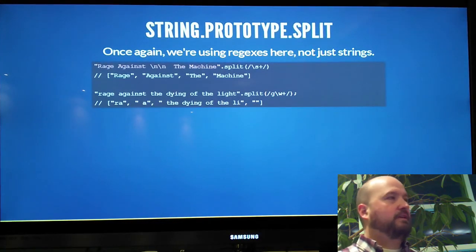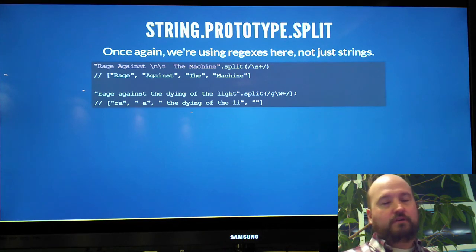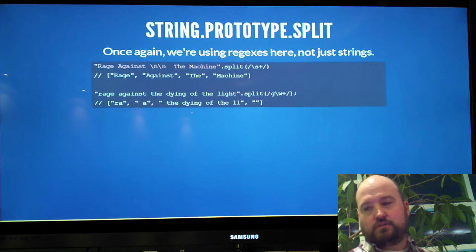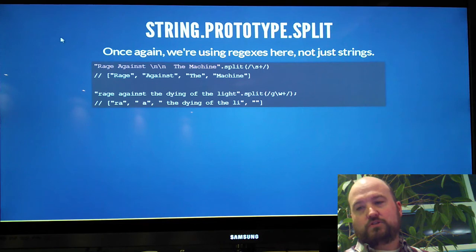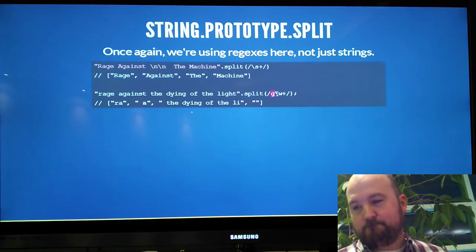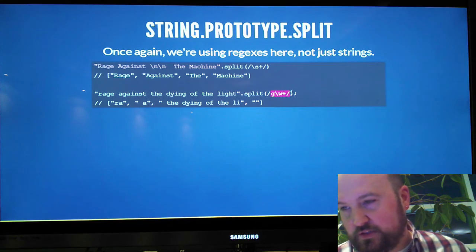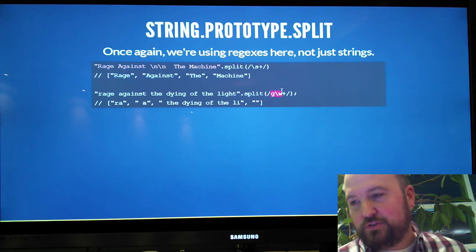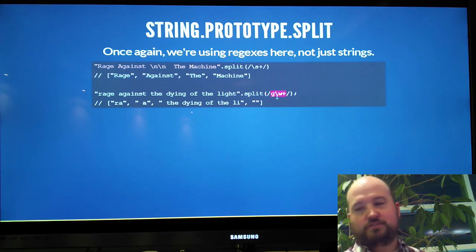Prototype split, again, it's not just a string operation like it might be in some other languages. But this will also give you an array. Split on a G followed by any number of word characters. Which is why light was split. This entire thing became the split and we've got an empty string at the end.